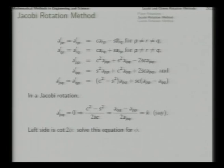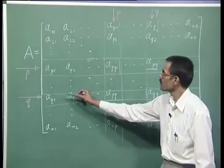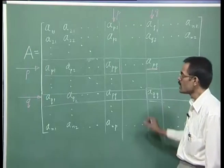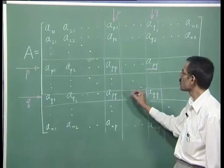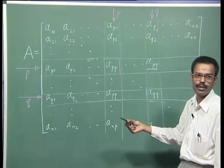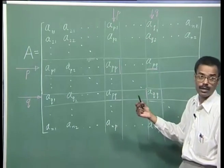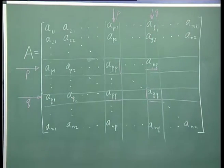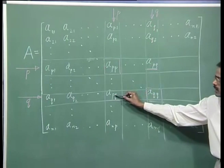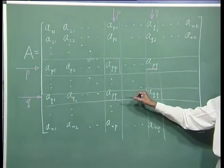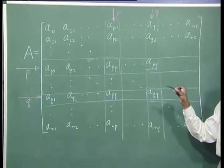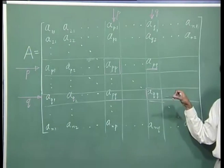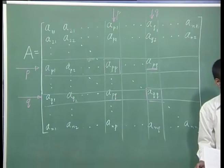Once phi is solved, we have cos(phi) and sin(phi), so we have the complete rotation matrix in hand. Using cos(phi) and sin(phi), we find out all the changes in the p-th row, p-th column, q-th row, and q-th column. This will certainly be 0 because that is the condition we used to find phi, and other values in the two rows and columns will have appropriately and consistently changed.